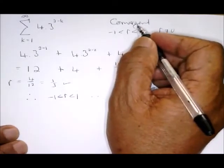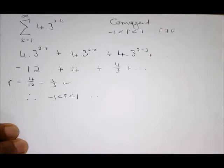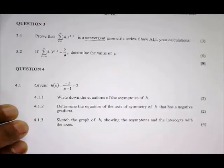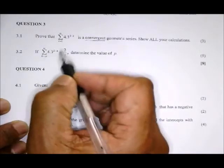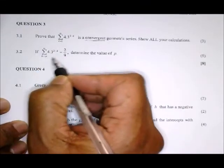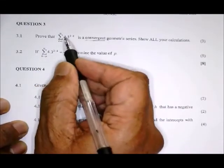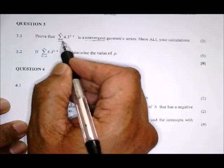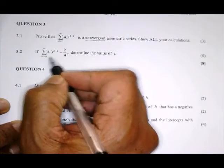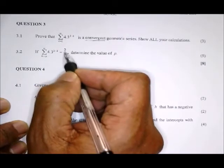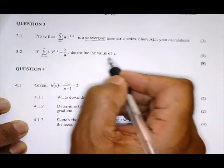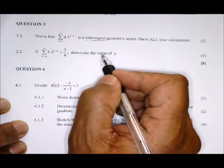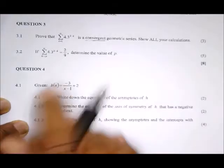In the second question, or second part, they repeat the very same sigma. The only difference is that k is one here, k is p, and they give you the sum. Sum is two over nine, so you must find what is the value of p.